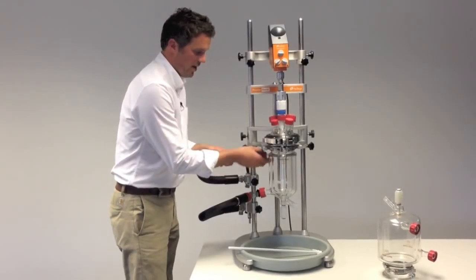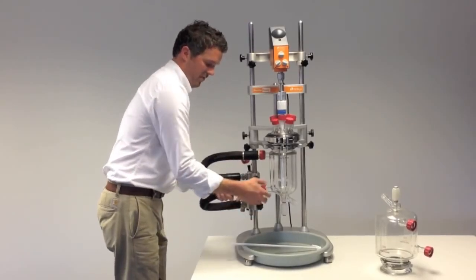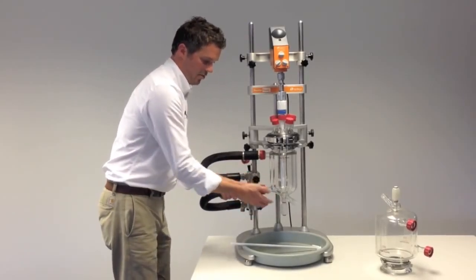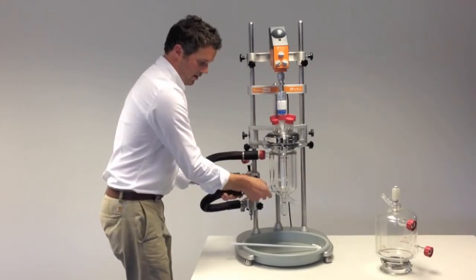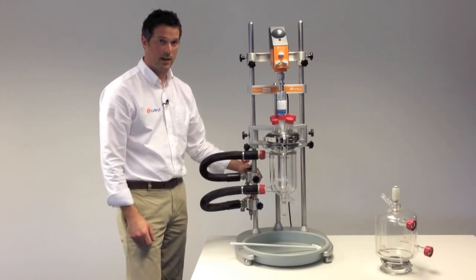Then reattach the hoses. These just push fit and the red collars tighten them onto the sidearms. Once you close the vent valve on the top, you're ready to fill up from your recirculator again.